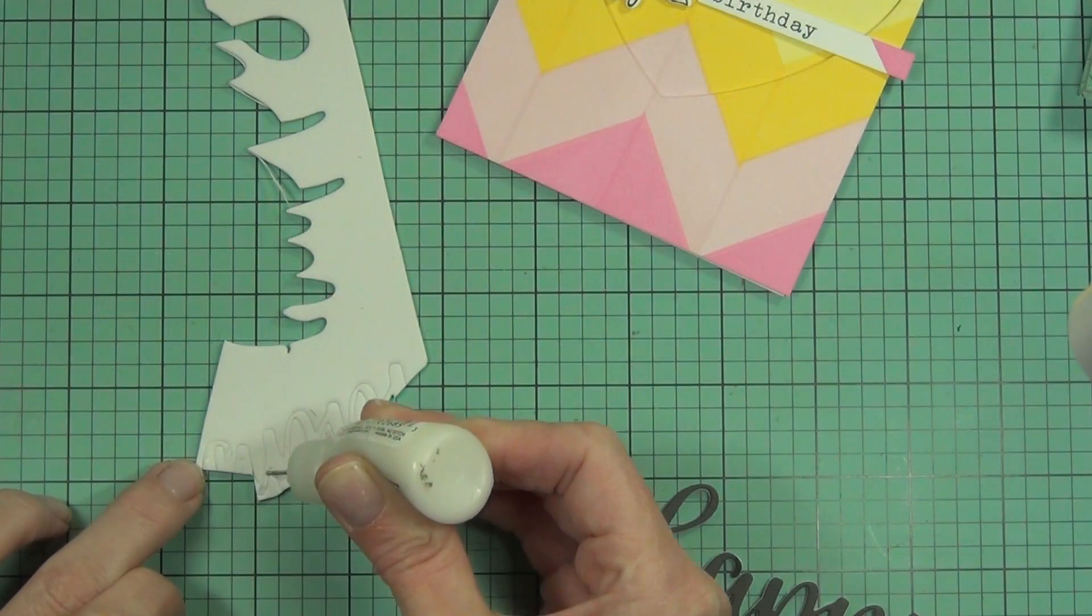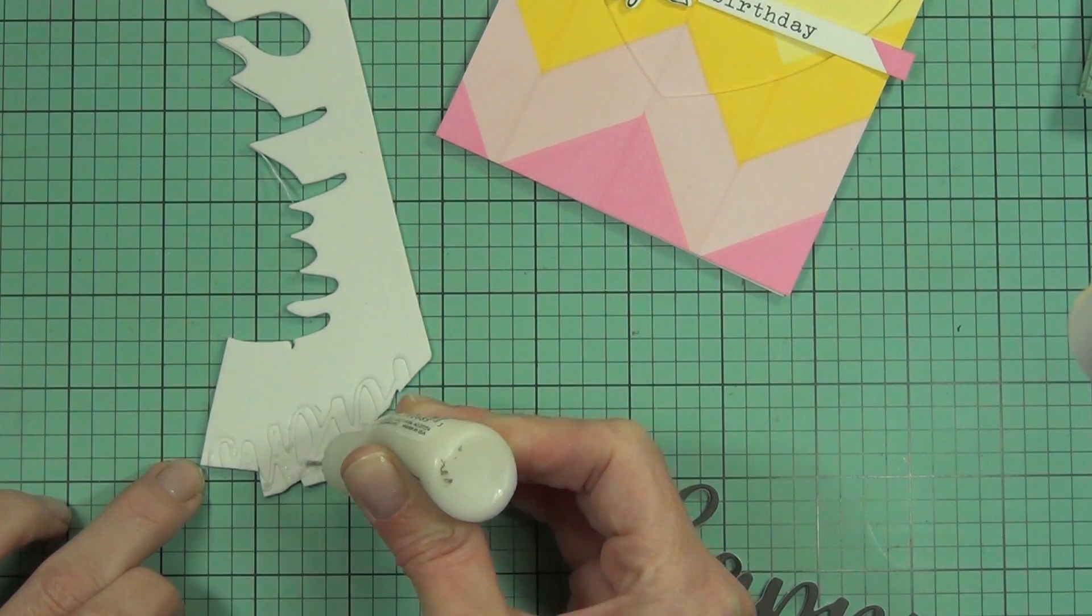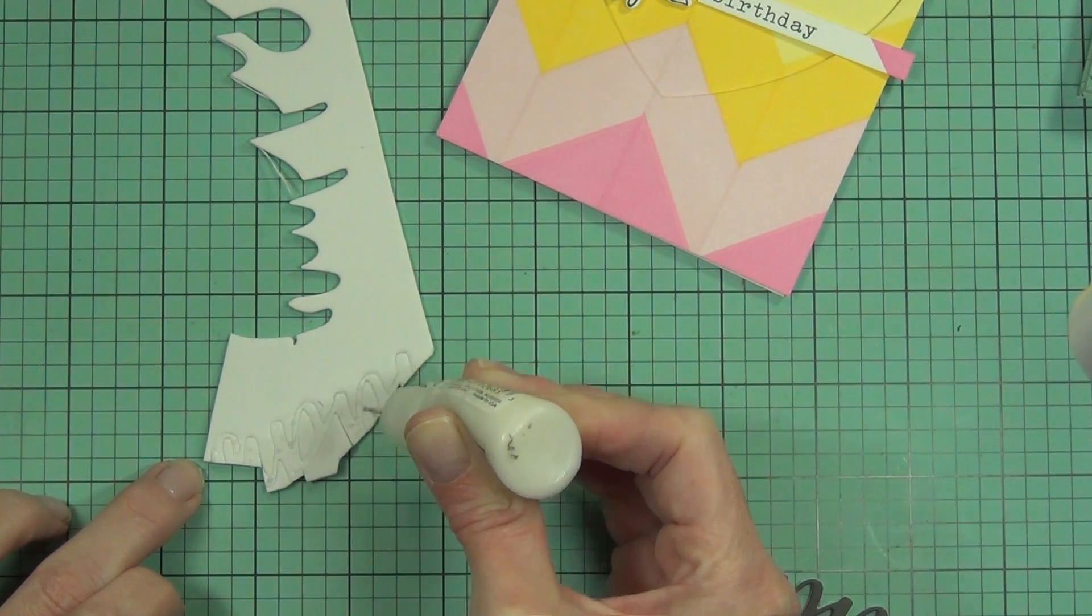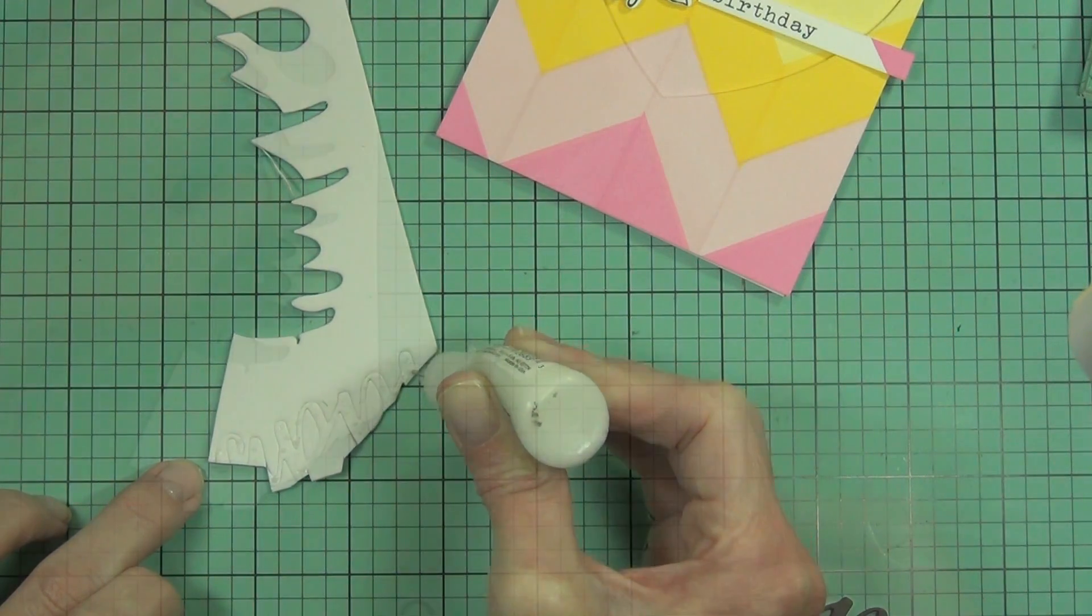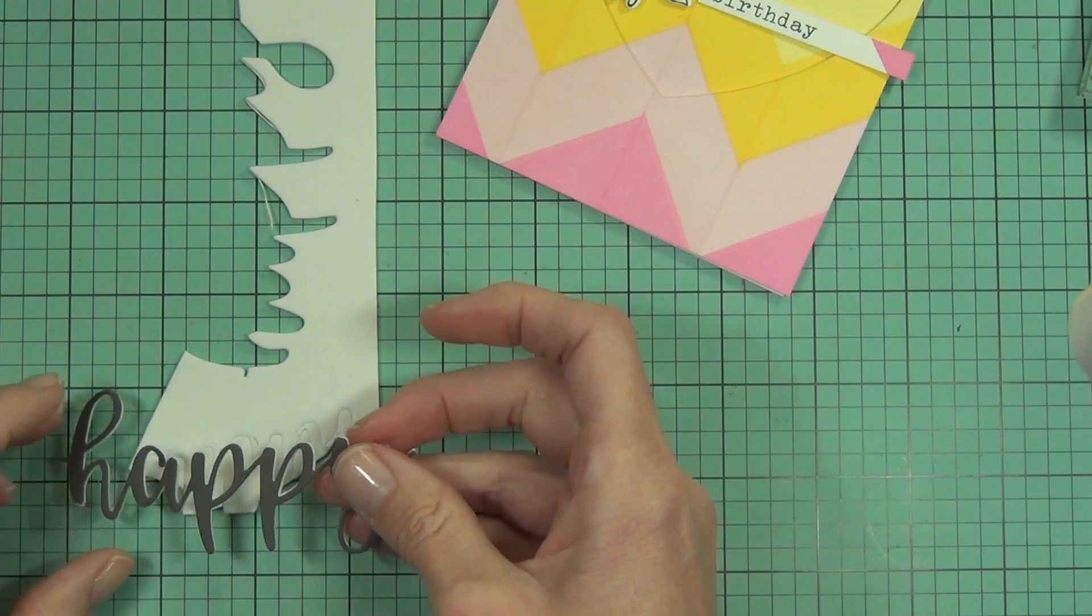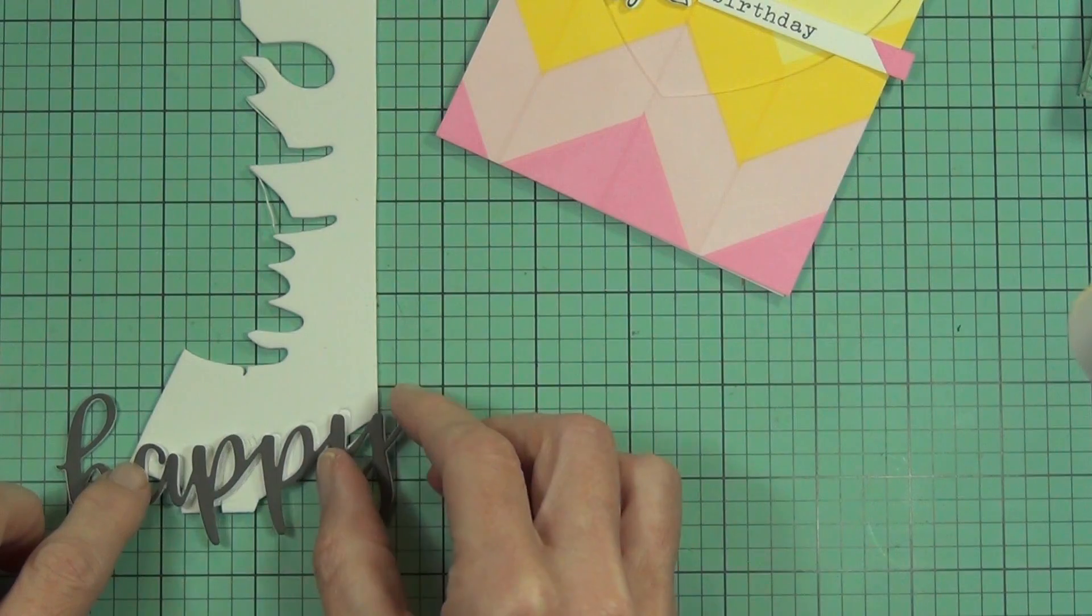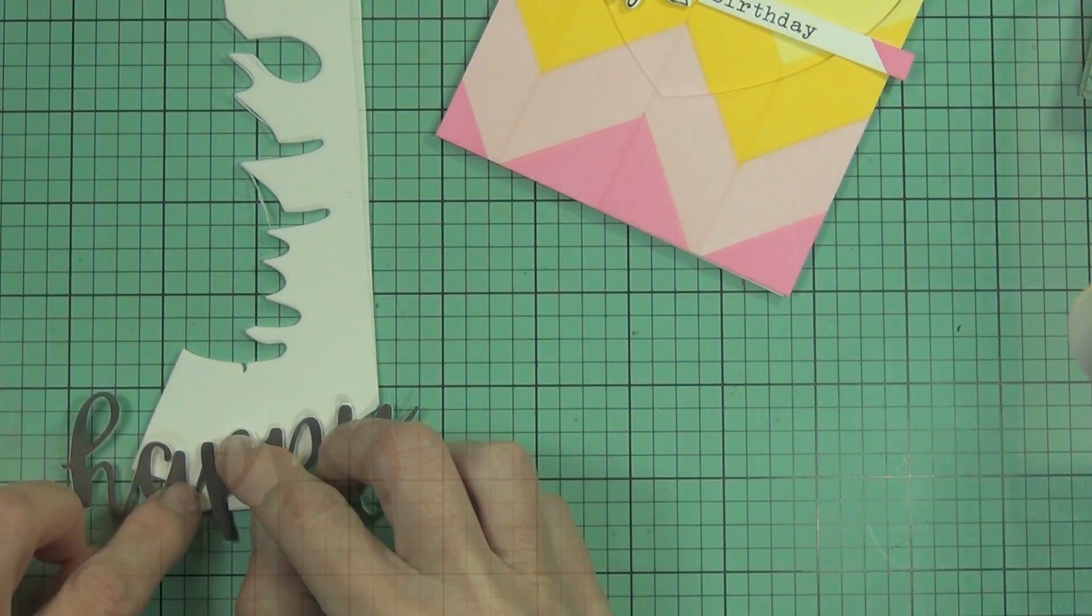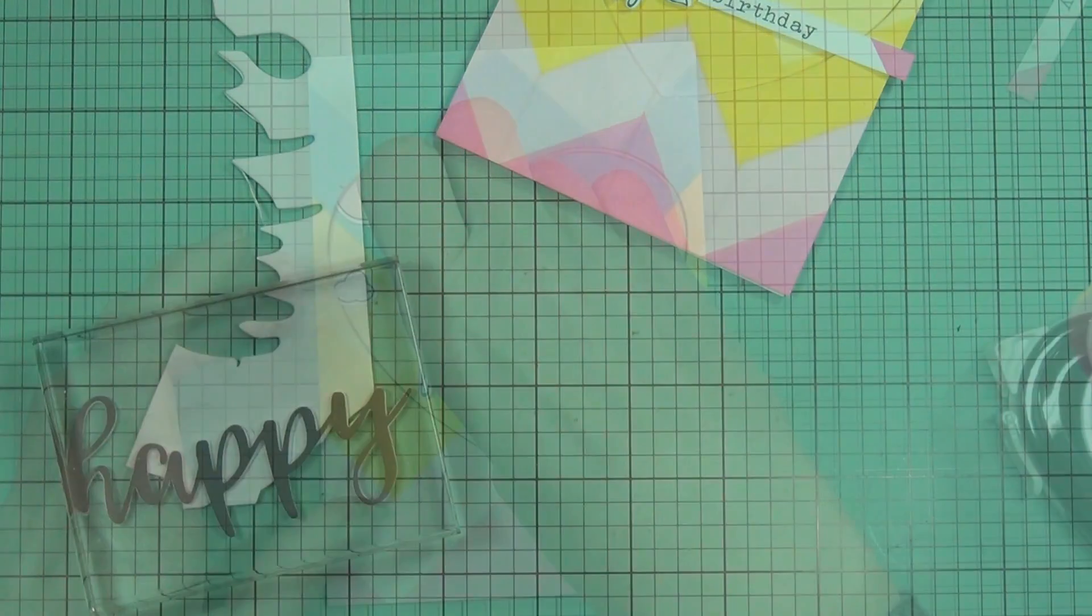I used some score tape on the back of my foam and I've die-cut the word happy from some of the Altenew dark gray cardstock. I've already popped it up on one layer of foam, but because I've popped my front panel up already, I want to have some of this sitting over the recessed heart. So I'm making a double layer of foam behind the pieces of the word happy that are going to go within the heart.